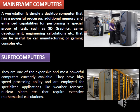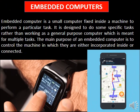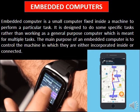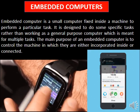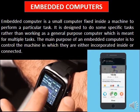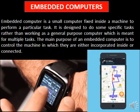Supercomputers. They are among the most expensive and most powerful computers currently available. They have high-speed processing ability and are employed for specialized applications like weather forecasting, nuclear plants, etc., that require extensive mathematical calculations. Embedded computers. An embedded computer is a small computer fixed inside a machine to perform a particular task. It is designed to do a specific task rather than working as a general-purpose computer meant for multiple tasks. The main purpose of an embedded computer is to control the machine in which it is incorporated or connected.